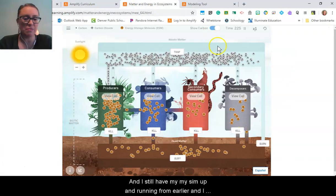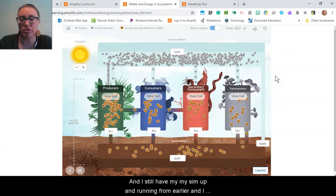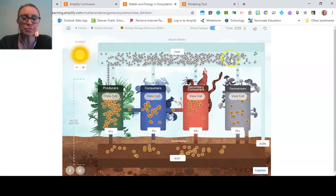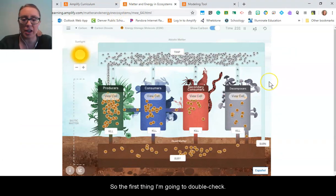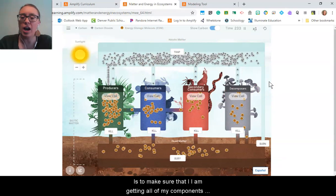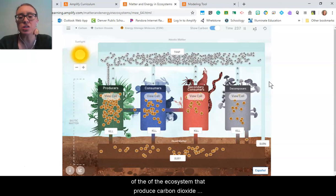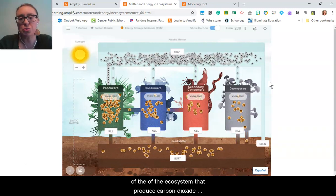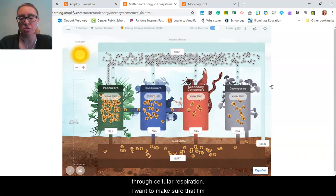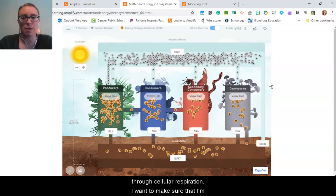I still have my sim up and running from earlier. I didn't change anything. So the first thing I'm going to double check is to make sure that I am getting all of my components of the ecosystem that produce carbon dioxide through cellular respiration. I want to make sure I'm not forgetting anything.